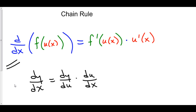One other way to write this is in terms of fraction notation. dy/dx, the derivative of y with respect to x, is equal to the derivative of y with respect to your stuff times the derivative of your stuff with respect to x. And of course, when you multiply these fractions, the du's will cancel out and it works out very nicely.